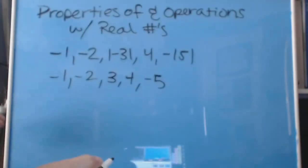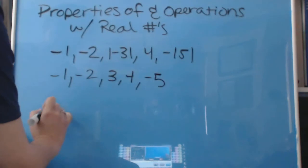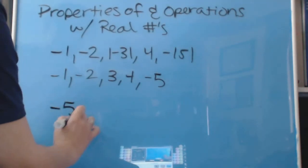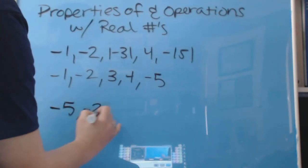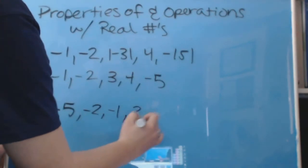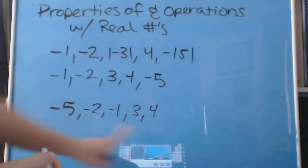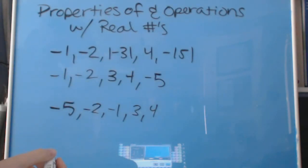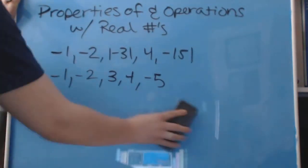Now we put them all in order from least to greatest. Negative 5 is the smallest number, so that goes first. Next we have negative 2, then negative 1, then 3, and finally 4. We had to evaluate the absolute values first — if we'd tried to order them before doing that, we'd have been in big trouble and confused ourselves.